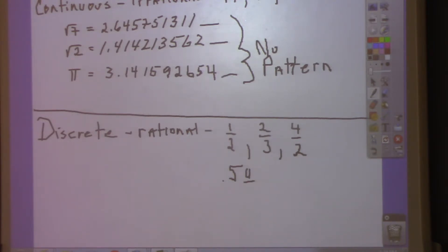Punch these in. What's one-half? Can you tell me what that next digit is? Zero. How about two-thirds? Point six, six, six, six, six. So you can tell me what that next digit is? And four over two? Two. So do you have predictability with rational numbers? Yes. Is it more solid? Yes.